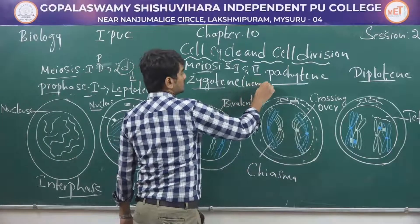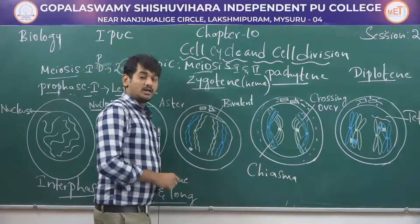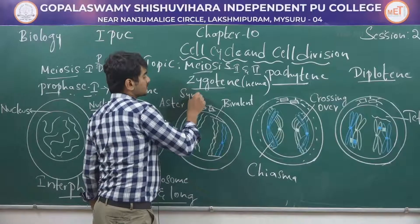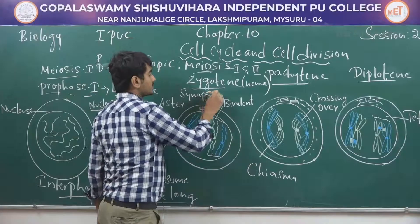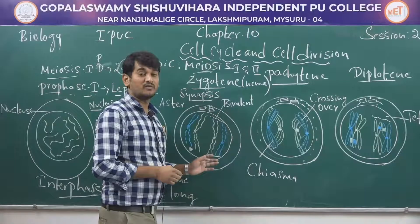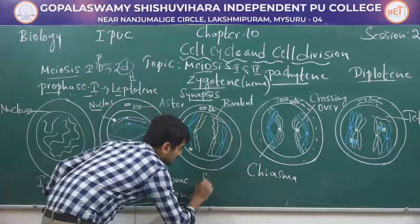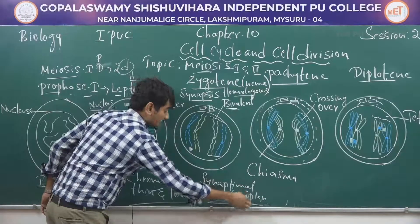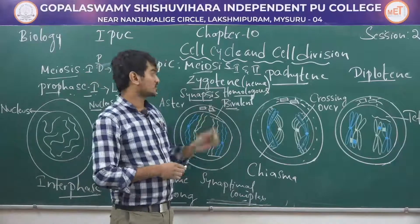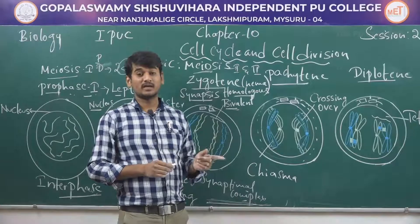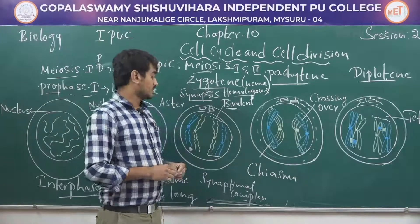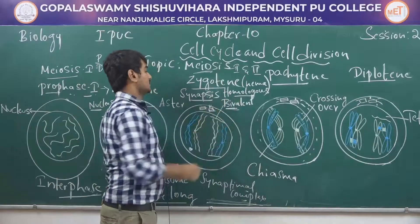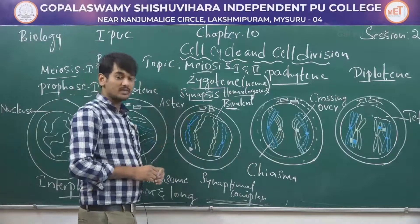The next stage is zygotene, also called zygonema. Here similar chromosomes start pairing with each other — the pairing of chromosomes is called synapsis. Synapsis takes place with the help of a complex structure called the synaptonemal complex. The paired chromosomes are called homologous chromosomes — one is related to maternal origin and the other to paternal origin. Each pair of homologous chromosomes is called a bivalent.